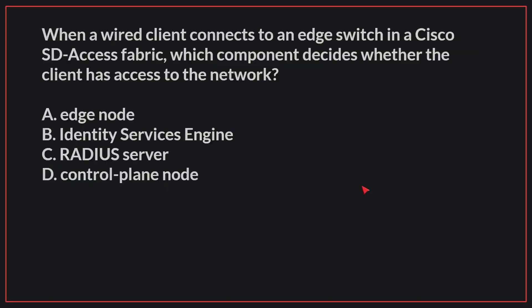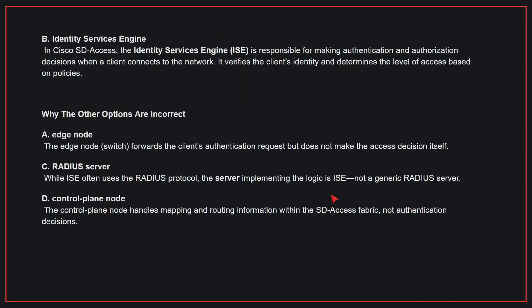When a wired client connects to an edge switch in a Cisco SD-Access fabric, which component decides whether the client has access to the network? The correct answer is A. In Cisco SD-Access, the ISE is responsible for making authentication and authorization decisions when a client connects to the network. It verifies the client's identity and determines the level of access based on policies.